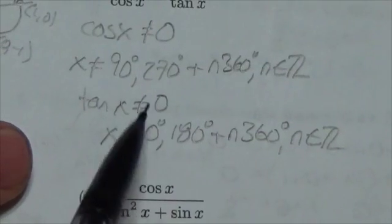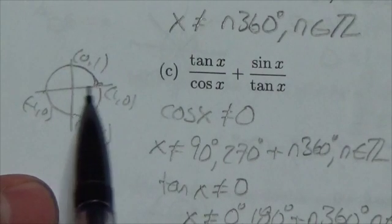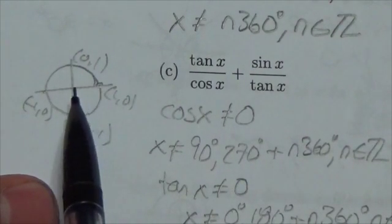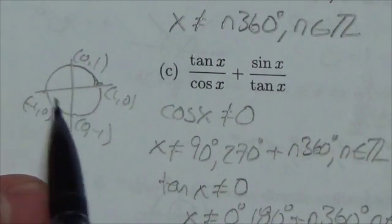Now, we have got restrictions here. Look what's going on. We've got an issue at zero, at 90, at 180, and at 270. And then these things are going to repeat.